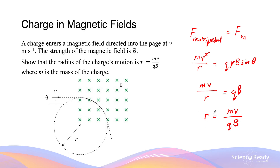By rearranging, we get r = mv/qB. So the radius of circular motion depends on four variables: the mass of the charged particle, its velocity, the charge of the particle, and the strength of the magnetic field. The radius is directly proportional to mass and velocity — so heavier mass or faster velocity means a larger radius. The radius is inversely proportional to charge and magnetic field strength — so greater charge or stronger magnetic field means a smaller radius.